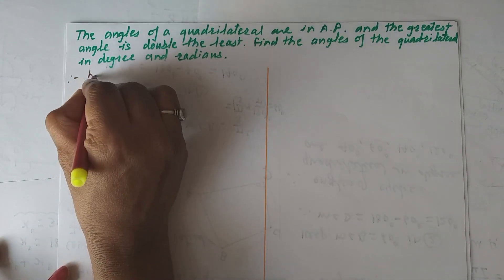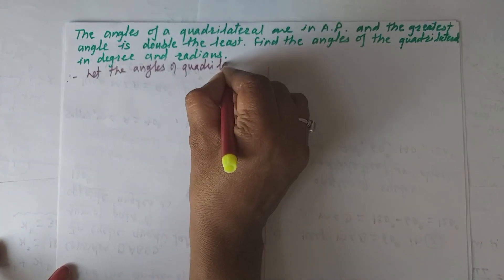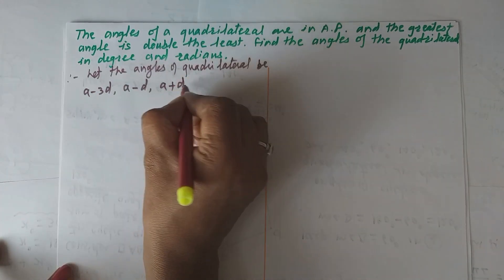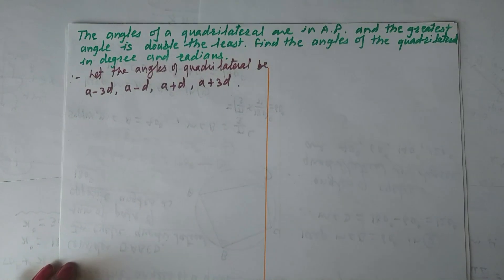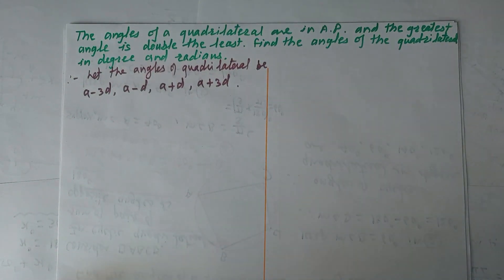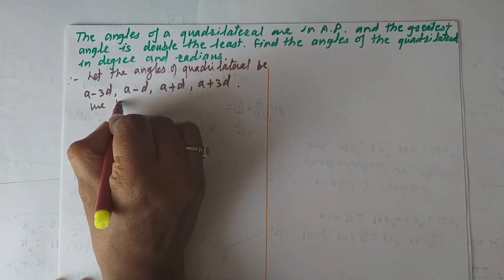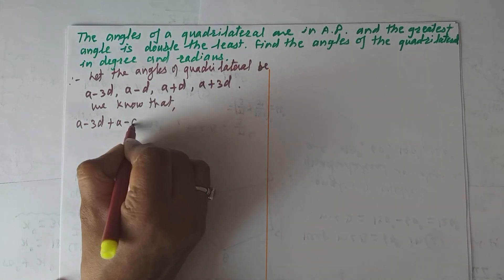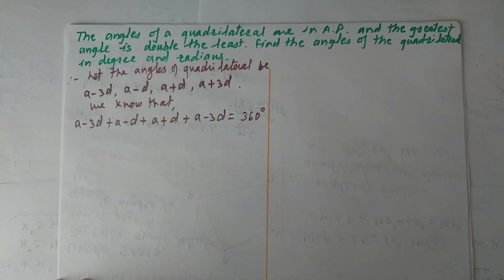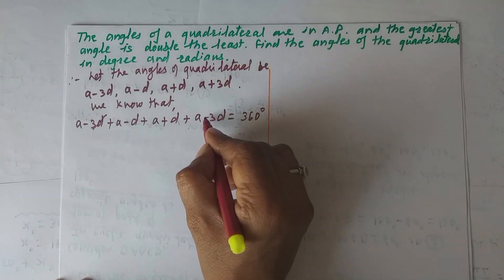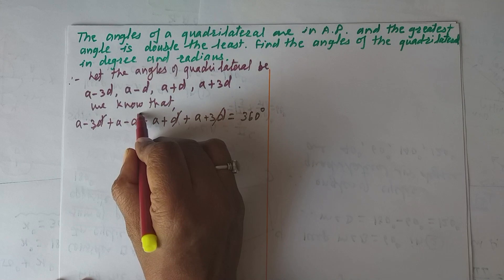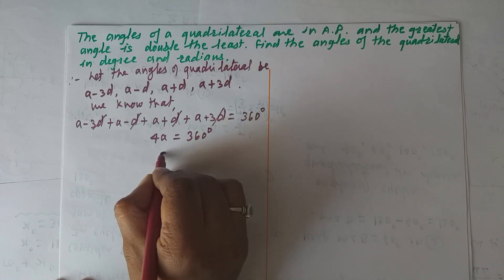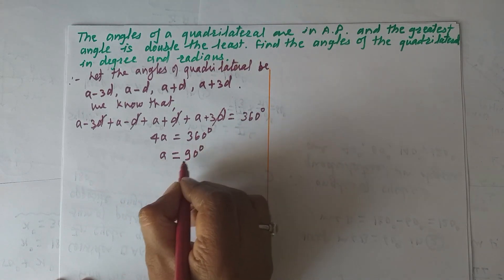Let the angles of the quadrilateral be a−3d, a−d, a+d, and a+3d. The sum of all angles of a quadrilateral is 360°. Adding these terms: the ±3d and ±d cancel, giving 4a = 360°, so a = 90°.